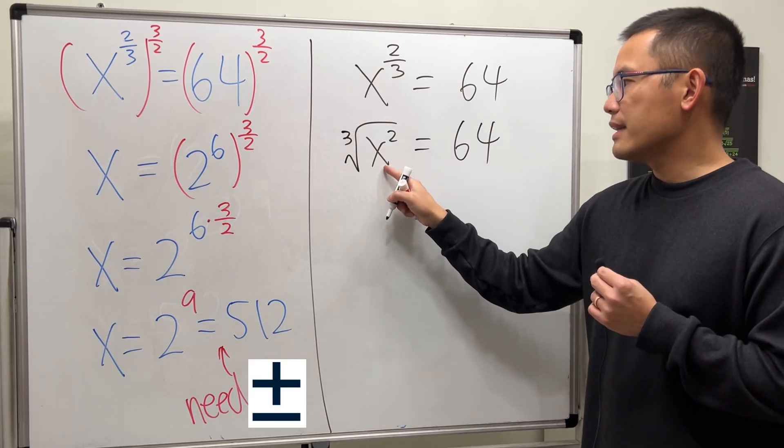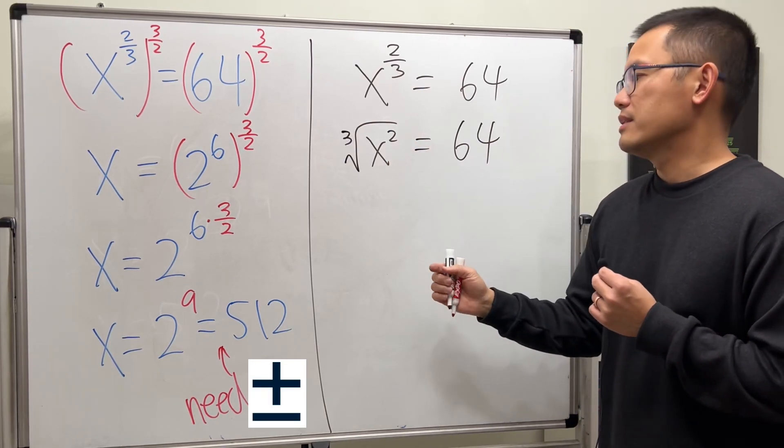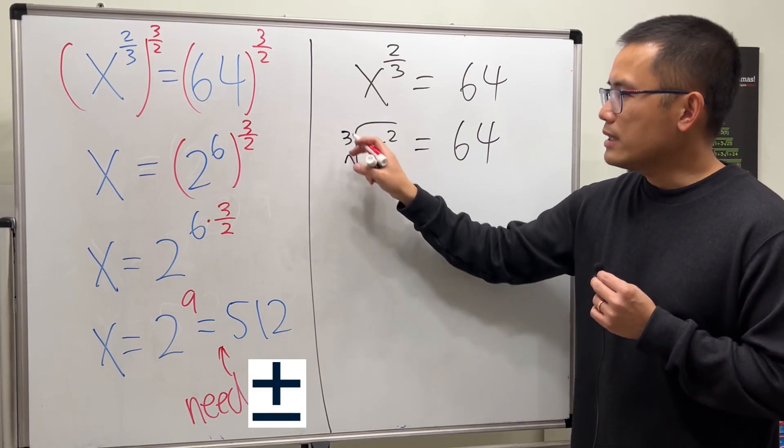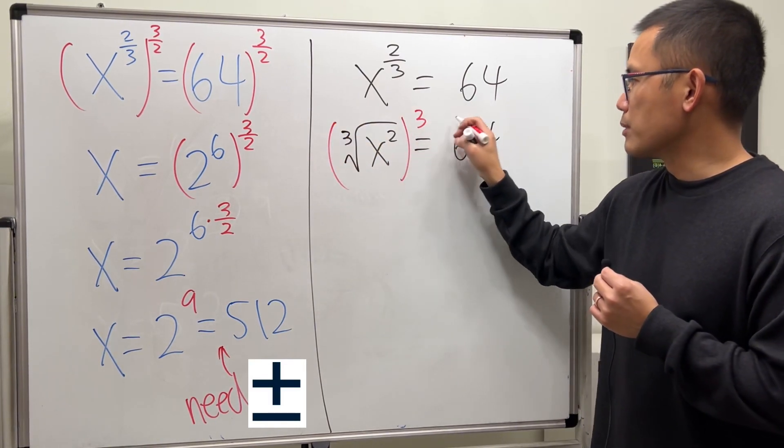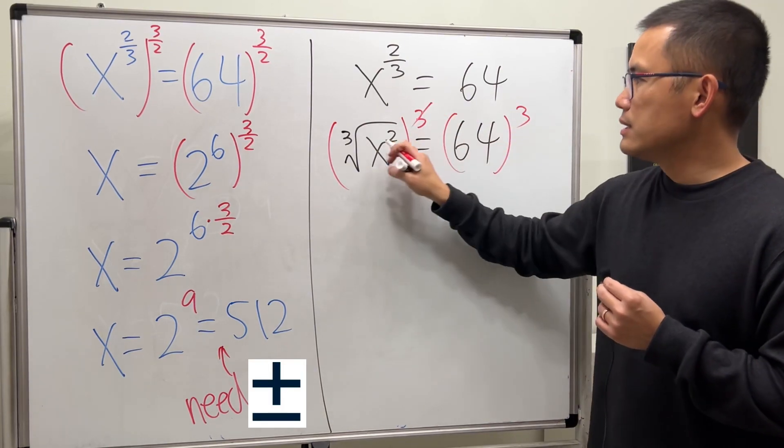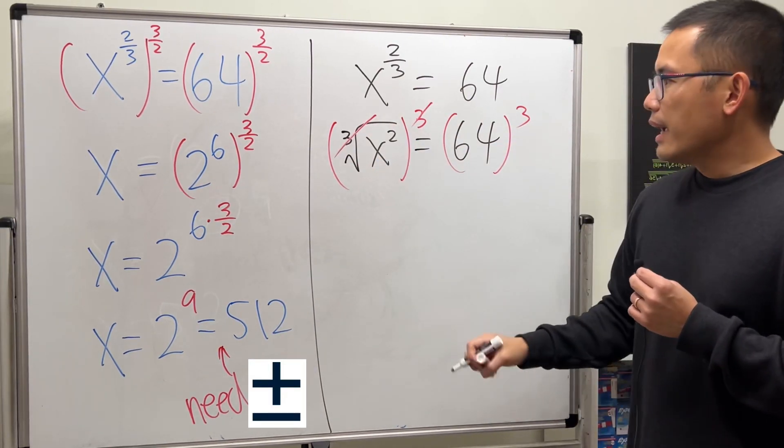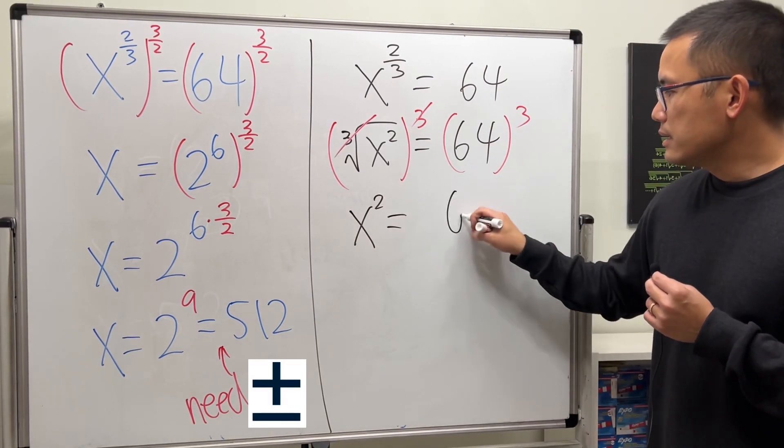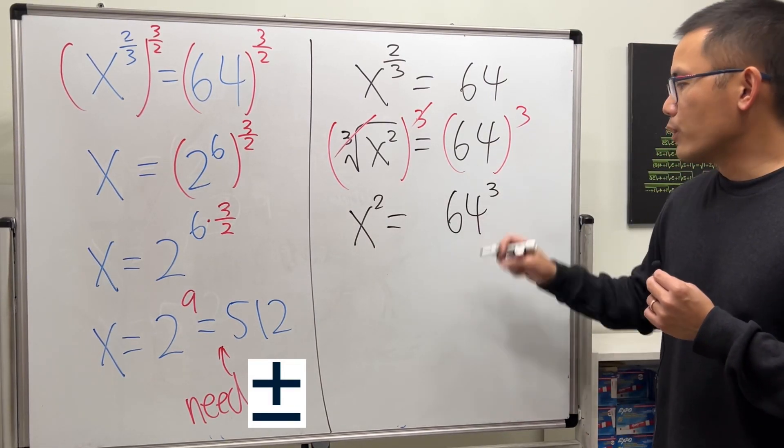And now you see we have an x squared equation. Yes, but first we should get rid of the cube root here, right? And this is in the radical, so just raise both sides to the third power. So that this and that can cancel, and then right here, x squared equals 64 to the third power. I'm not going to work this out yet.